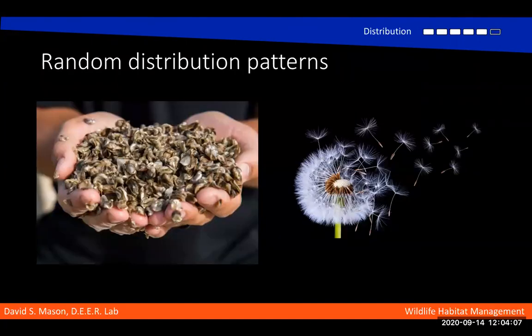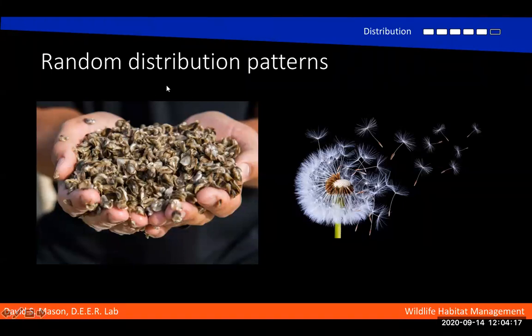You can also see random distribution patterns, which is the least common. These are oyster larvae here, carried by currents. Similarly, we have dandelion seeds, which are carried by wind.